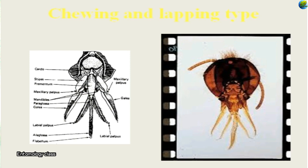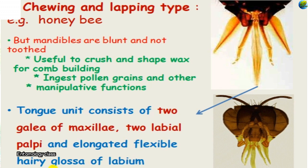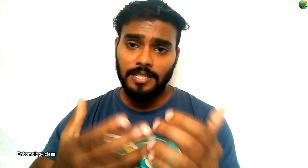In honey bees, the maxillary segment and labial segment combine to form the lapping unit. The maxillolabial structures are modified to form the lapping tongue. This tongue unit consists of two galea of the maxillae, two labial palps, and the elongated flexible hairy glossa of the labium. When extended it forms a spoon-like structure at the terminal portion called the flabellum, useful to lick nectar from the plant.